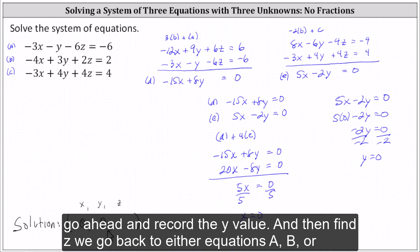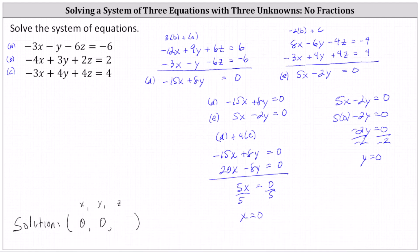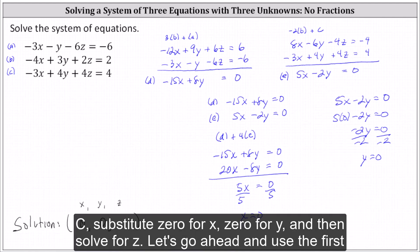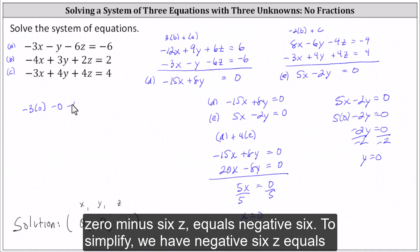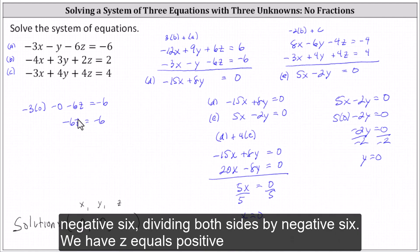And now to find Z, we go back to either equations A, B, or C, substitute zero for X, zero for Y, and then solve for Z. Let's use the first equation. Substituting zero for X and zero for Y, we have negative three times zero minus zero minus six Z equals negative six. Simplifying, we have negative six Z equals negative six. Dividing both sides by negative six, we have Z equals positive one.